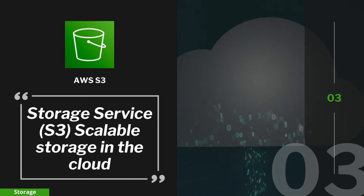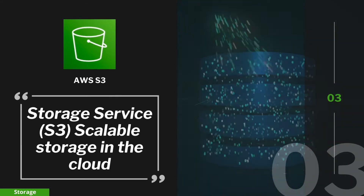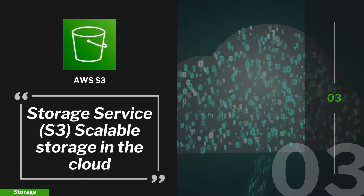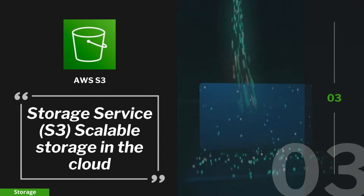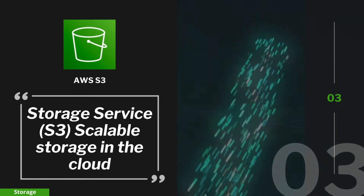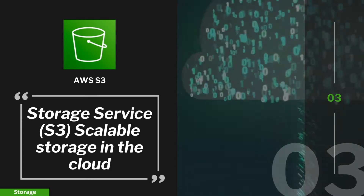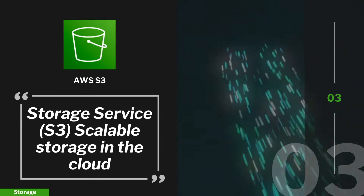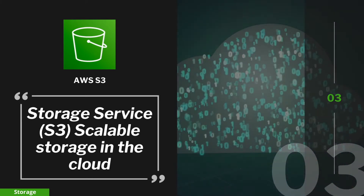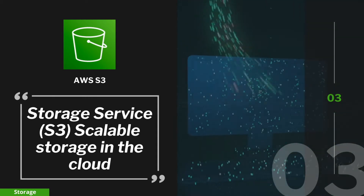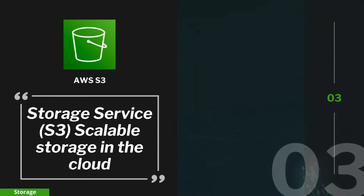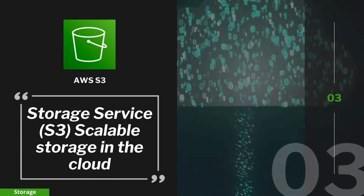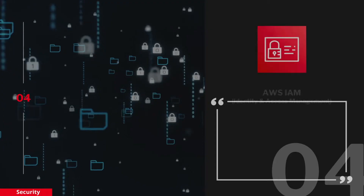Next on the list is Amazon S3, or Simple Storage Service. It's actually the service AWS originally started with, and it's an object storage service. That means it's built to store files of all kinds — images, video, text documents. You could use it as your own personal cloud file storage, or you can access it via your code running on AWS EC2, Lambda, or through one of the other services offered by AWS.